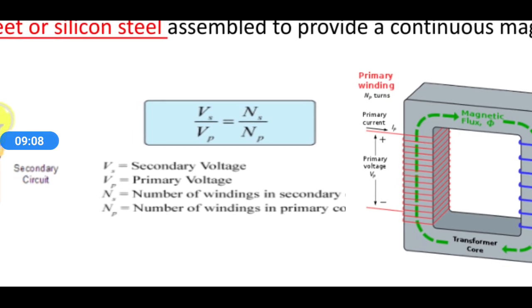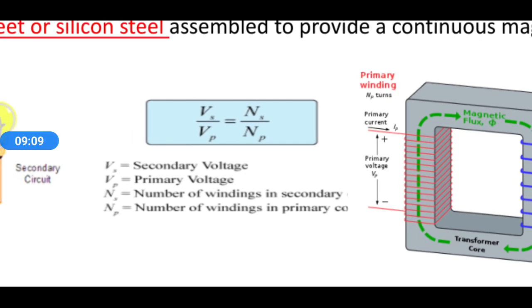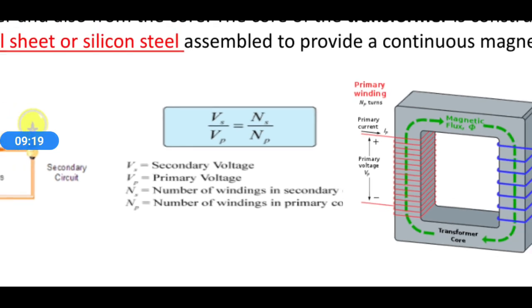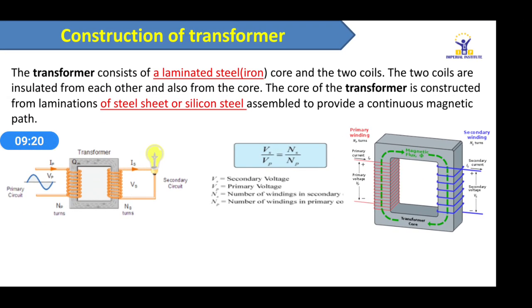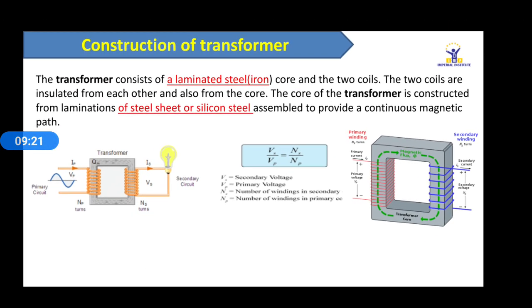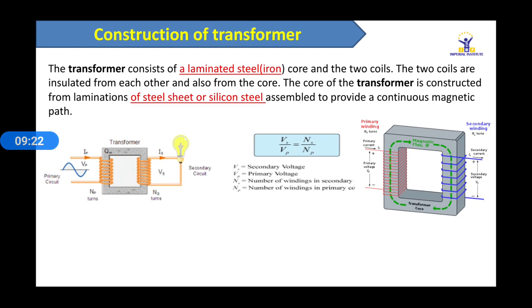To summarize the notation: VS is secondary voltage, VP is primary voltage, NS is the number of windings in secondary, and NP is the number of windings in primary. This is the basic concept.